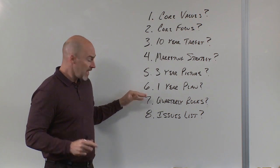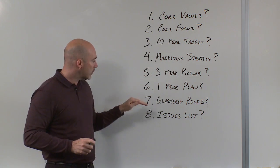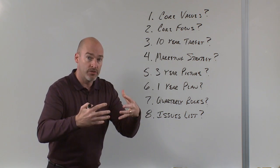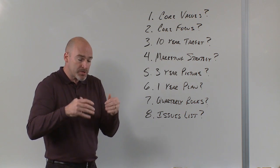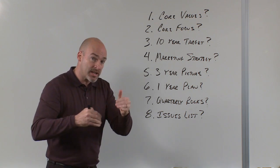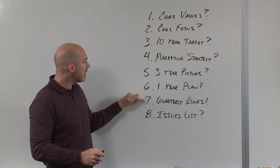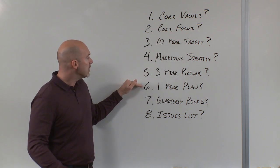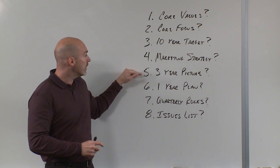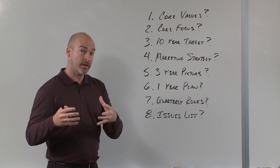Question number seven is then bringing it down to the ground and answering what are your quarterly rocks? What are the three to seven most important things that you and your team must get done in the next 90 days to make that one-year plan a reality, to put you on track for that three-year picture, and ultimately make that 10-year target a reality?